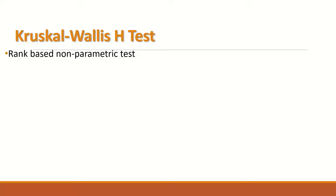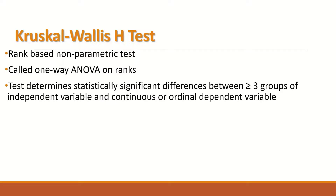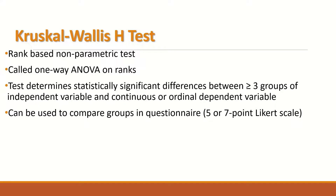The test ranks data and is based on a non-parametric approach, so it is a non-parametric test that ranks data. It is called the one-way ANOVA on ranks. The test determines statistically significant differences between three or more groups of an independent variable. The dependent variable can be continuous but not normally distributed, or it can be an ordinal variable — meaning data that are in order — which is non-parametric data.